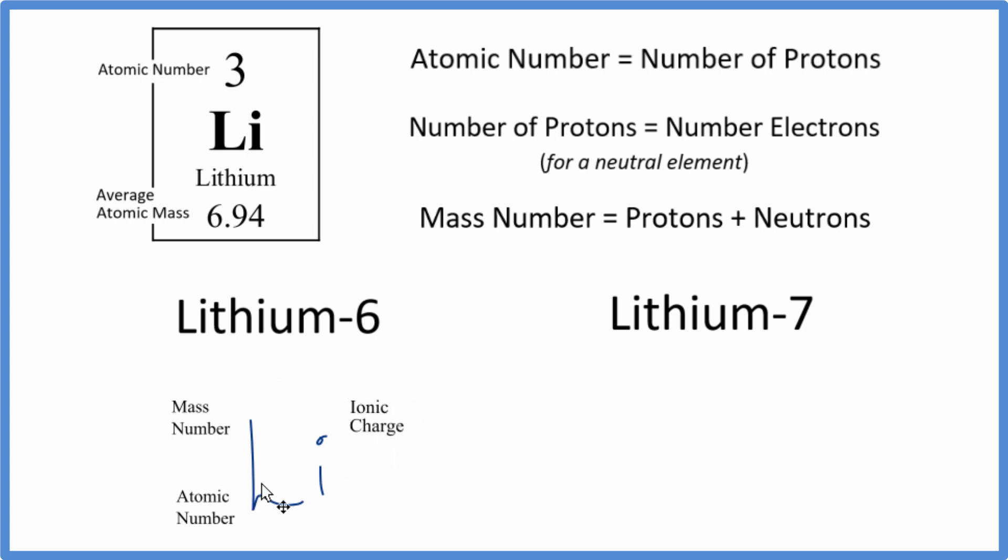So for lithium, we already know the mass number, that's six. So let's write that in. The atomic number, we go to the periodic table, this is the atomic number for lithium. And the atomic number tells us the number of protons. Lithium has three protons, that's the atomic number. So we can write our three in for the atomic number.